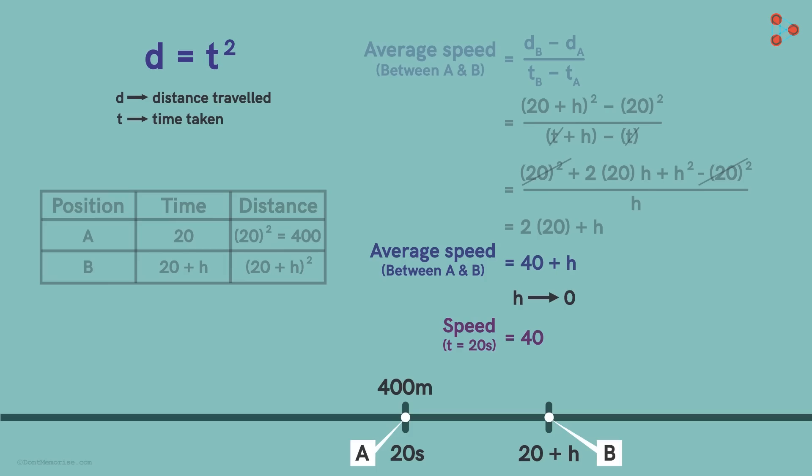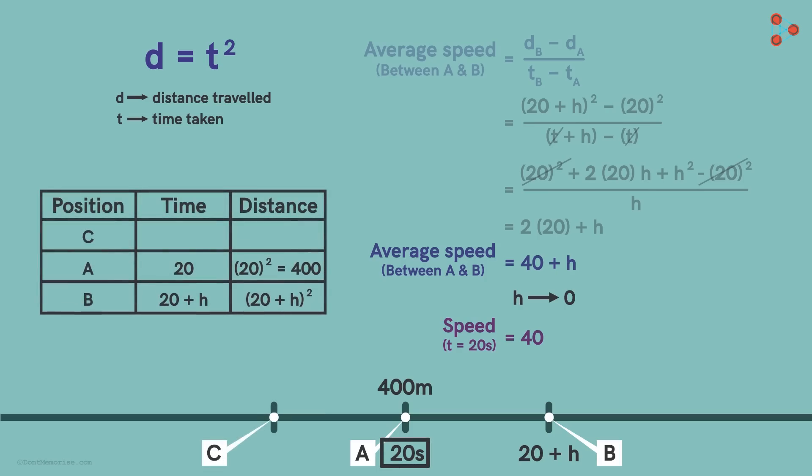If we want to find the average speed between this position and the positions before it, we just have to substitute negative h instead of h. And we would get the average speed as 40 minus h.